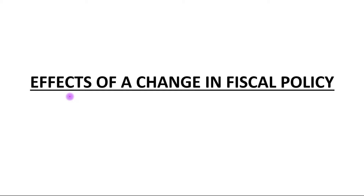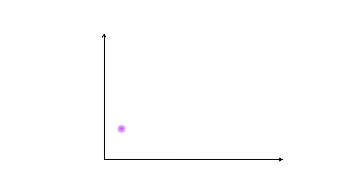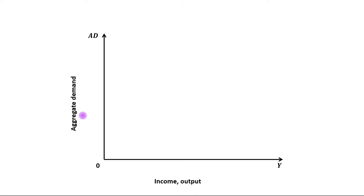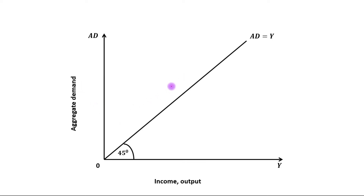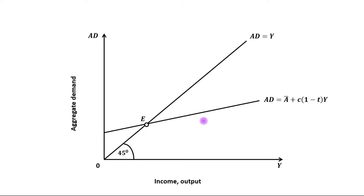Today's topic is the effects of a change in fiscal policy on the equilibrium level of income. We have two axes: on the horizontal axis we have income or output, and on the vertical axis we have aggregate demand. This is our 45-degree line and this is the initial AD curve.